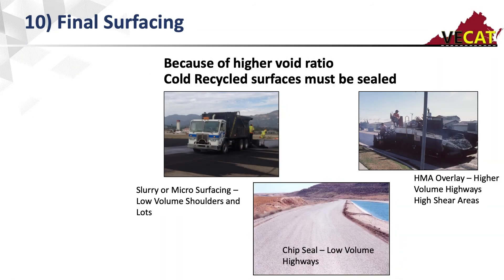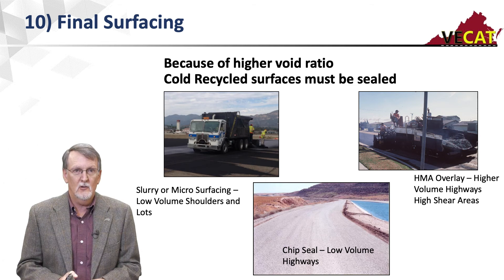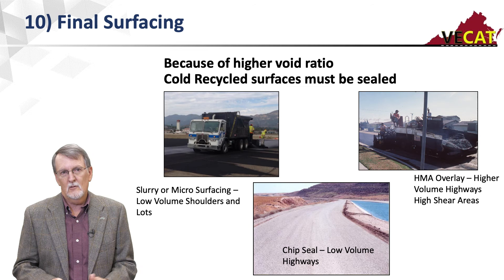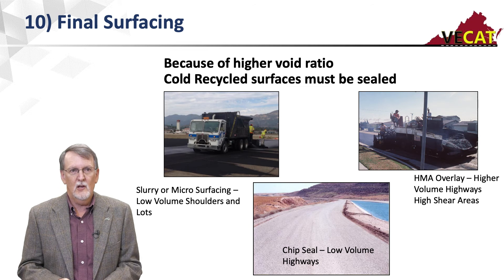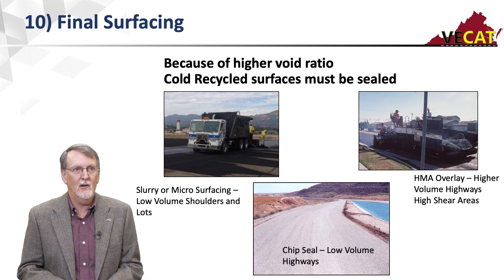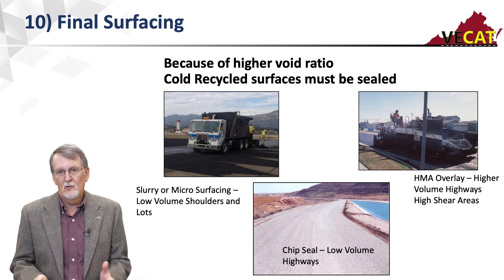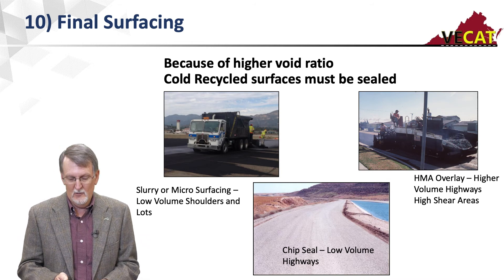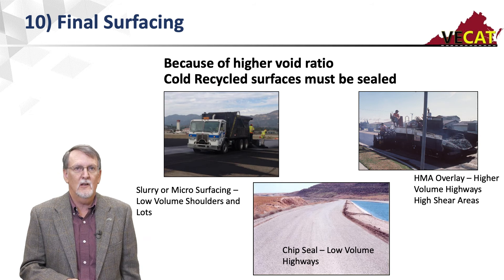For the final surfacing, a hot mix or warm mix asphalt overlay works well on higher-volume highways. For low-volume roads, chip seals, double chip seals, cape seals, slurry, or microsurfacing have all been used. Due to the higher in-place air voids, these mixes must be covered to protect them from moisture damage.